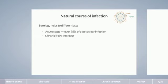Chronic hepatitis B virus infection is defined as persistent infection for at least six months. The term chronic infection, however, is associated with several phases.